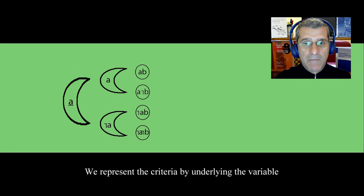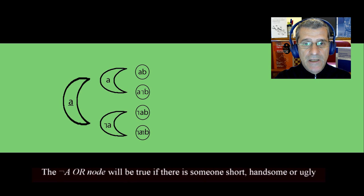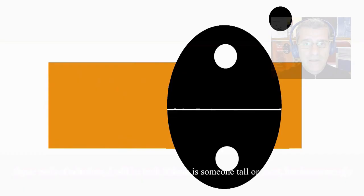The OR node A will be true if there is someone tall, handsome or ugly. The OR node not A will be true if there is someone short, handsome or ugly. Supernode of criterion A will be true if there is someone tall or short, handsome or ugly.